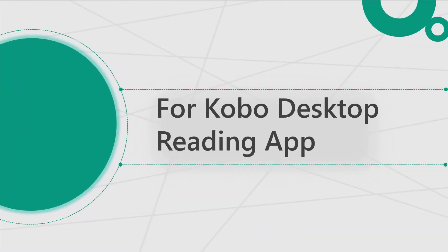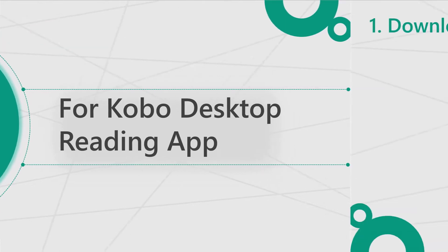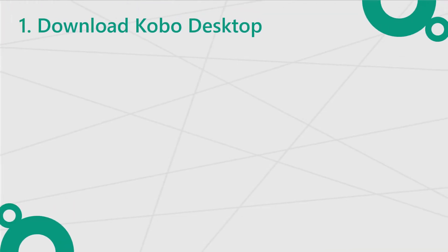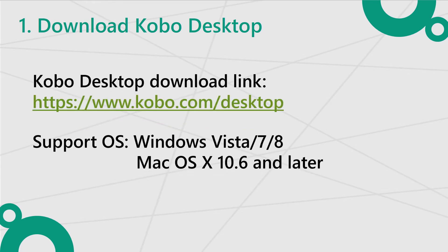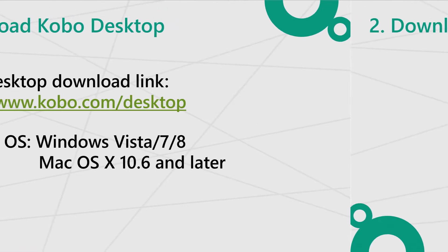If you don't have a Kobo eReader, like Kobo Touch or Kobo Glow, you should follow this method. Step 1: Download and install the Kobo desktop app. The Kobo official site provides both Windows and Mac versions.